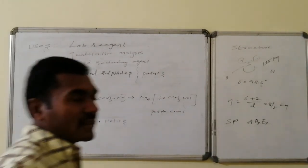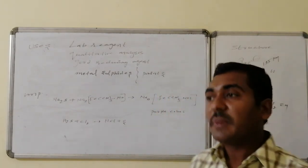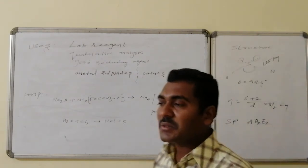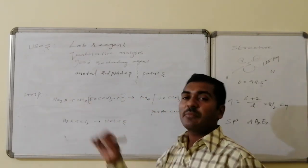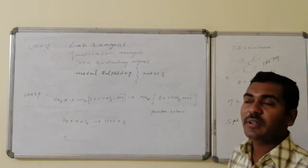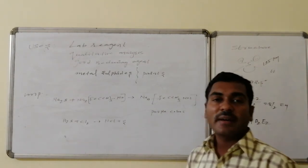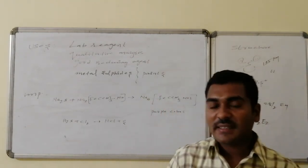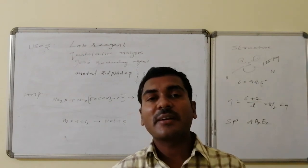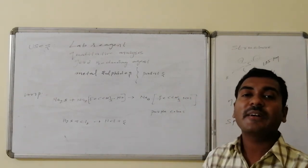Uses of H₂S: it is used as a laboratory reagent in qualitative analysis, as a good reducing agent, and to prepare metal sulfides, which are used as ingredients in the paint industry. An important test: H₂S in basic medium reacts with sodium nitroprusside (Na₂Fe(CN)₅NO) to form a purple-colored complex Na₄Fe(CN)₅NOS. H₂S is highly poisonous—excess inhalation can cause death. Its antidote is chlorine, which reacts with H₂S to produce HCl and elemental sulfur.